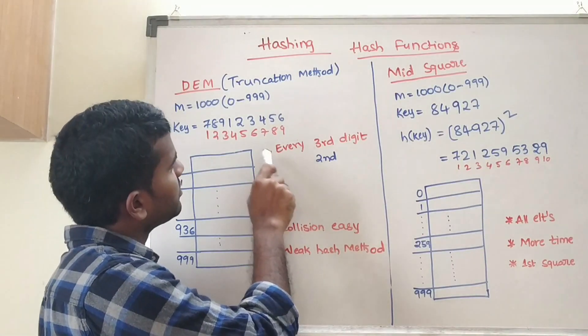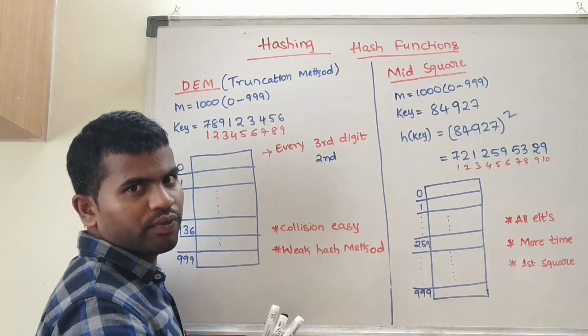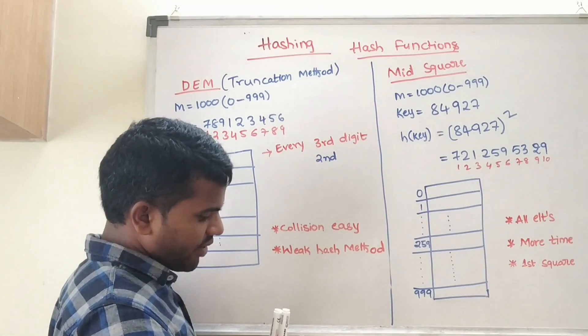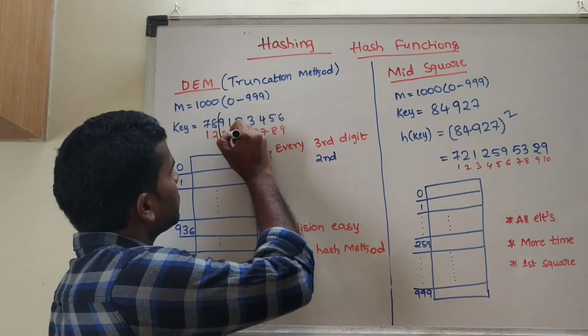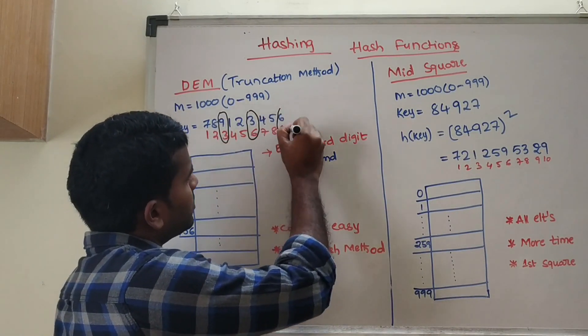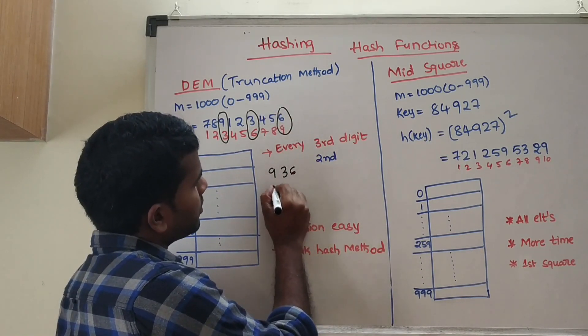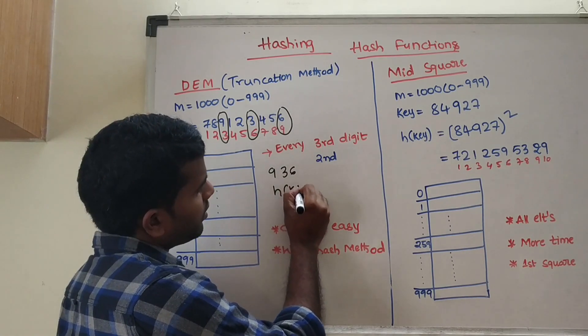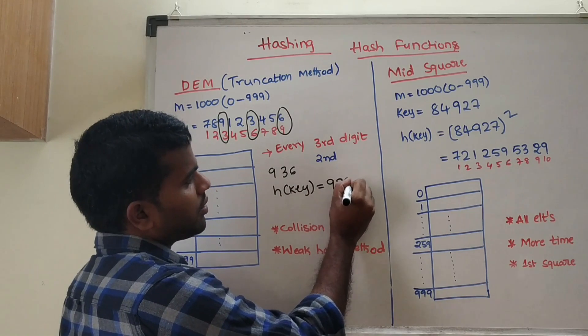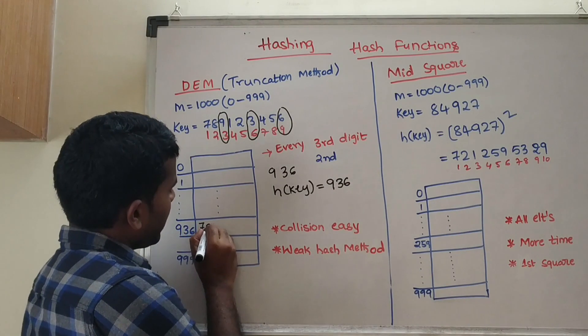So always choose three digits that will come as the output. Now in this example, we take every third digit. See, third digit, then third digit, then third digit - what are these? 9, 3, 6. This is the h(key) value equals to 936. In slot 936 you have to place the key 789123456.